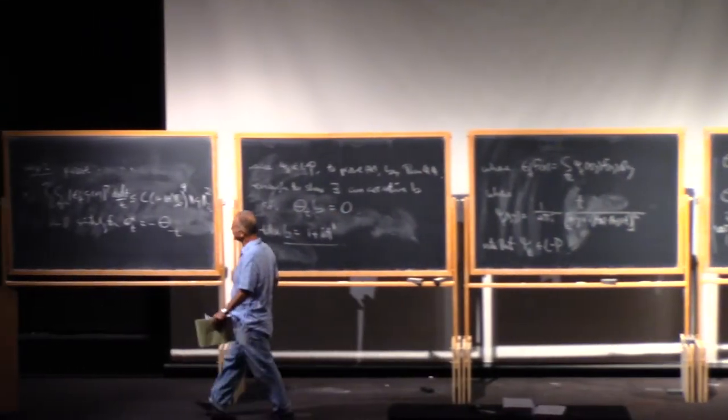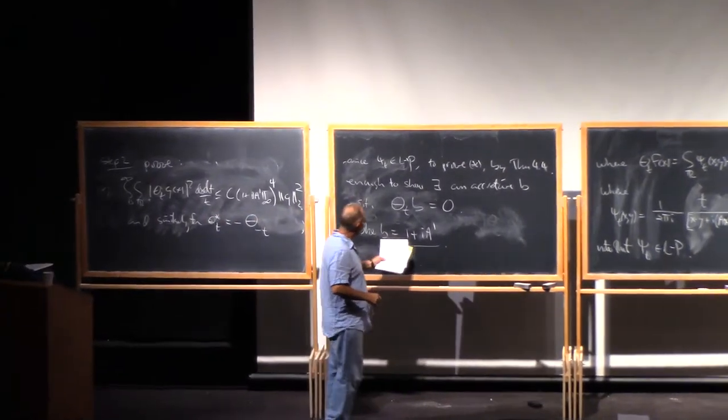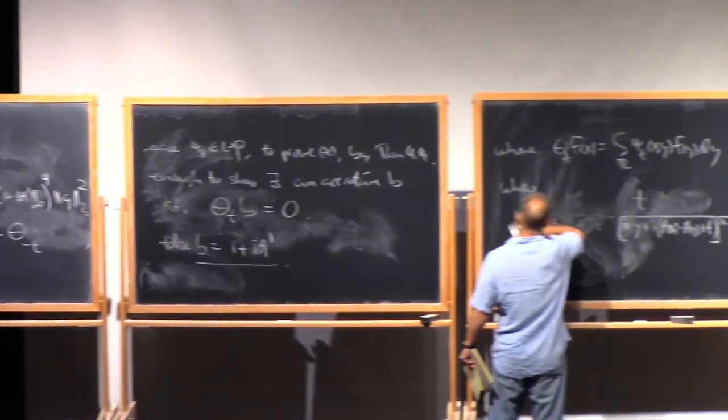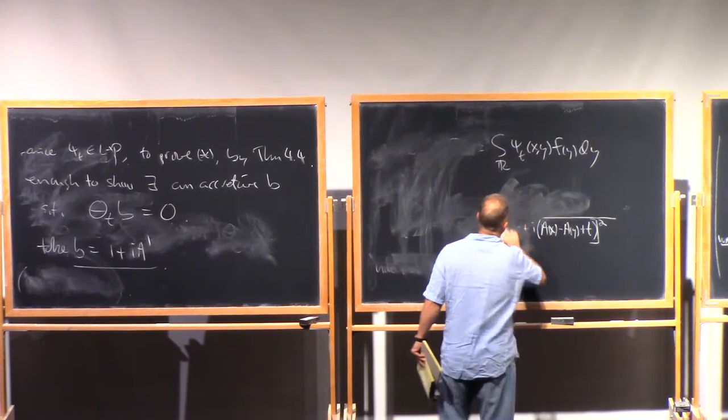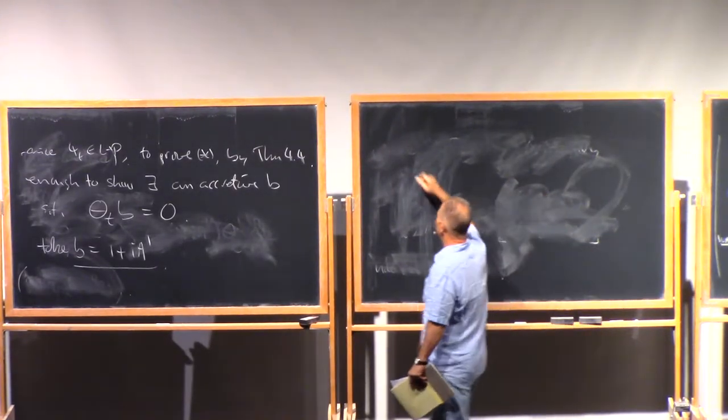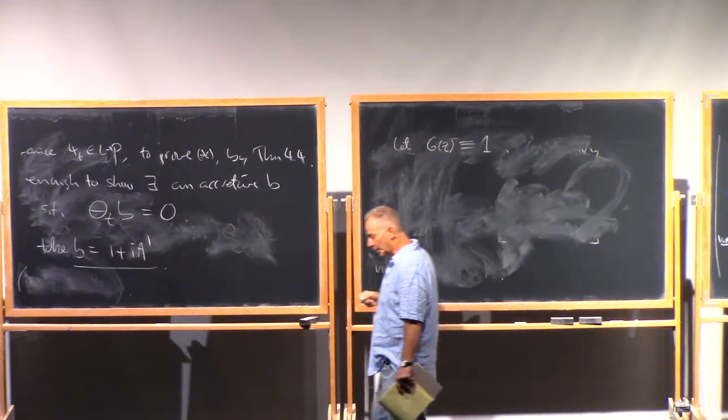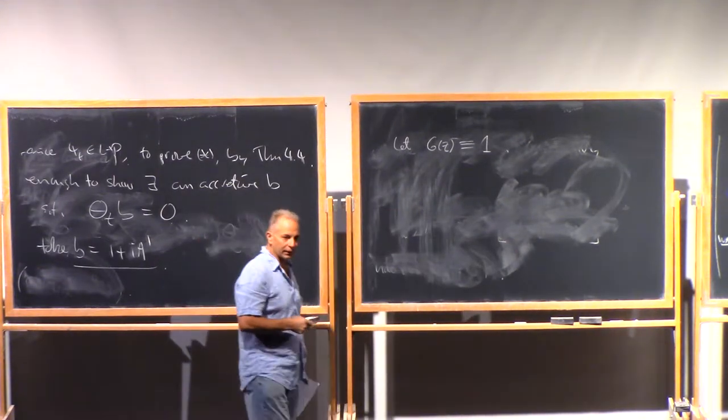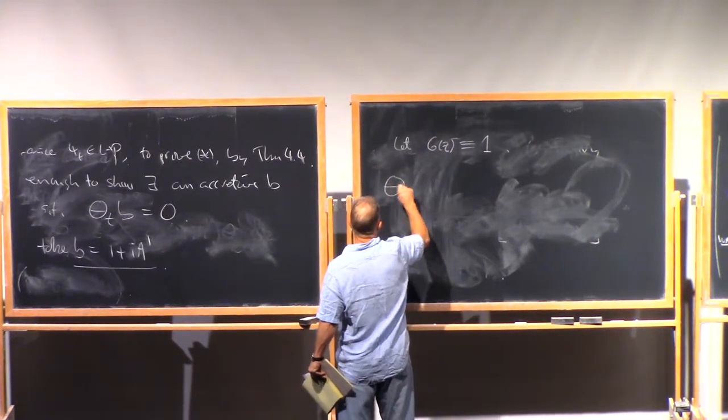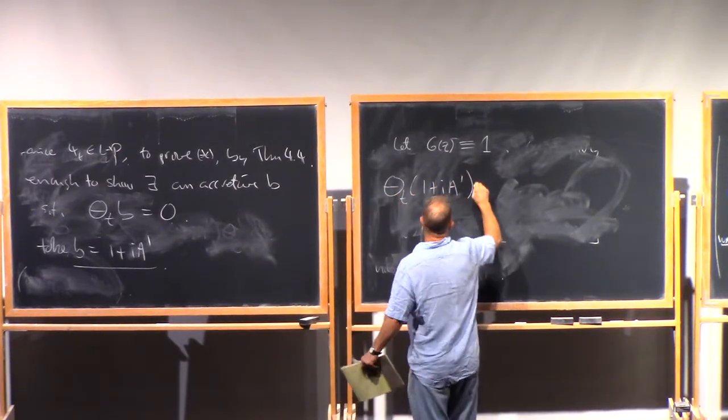Of course, that's accretive. A is Lipschitz, so this is bounded. And the real part is 1, which is certainly bounded away from 0. So why is this? Let G of Z in the complex plane be the constant function 1. That's analytic. So then what is theta T applied to 1 plus iA prime at X?